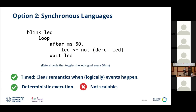Second option: synchronous languages. Some of you may know things like Estrel, Lustre, or Signal — from Inria originally. Estrel is an imperative language for control-heavy applications with timing semantics and deterministic execution. It's also reactive because you have preemption in Estrel. But it's not really scalable — those things don't particularly scale up.